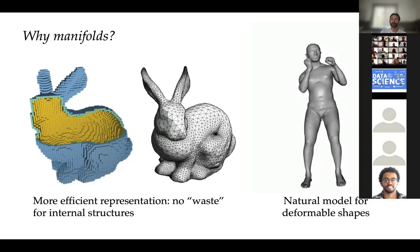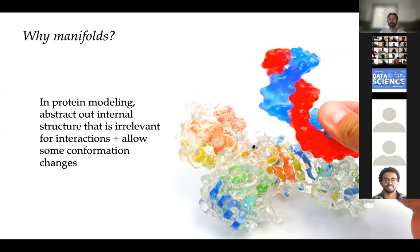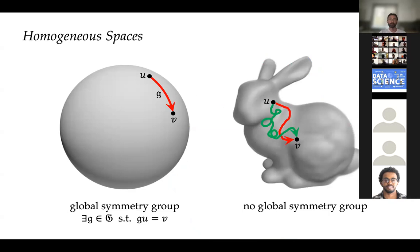Another somewhat exotic application, and a field that has exploded recently, is protein modeling. Protein molecules are 3D structures, and if you want to predict the interactions of proteins — what chemists call binding — you don't really care about what's inside; it's only the outside surface that matters for the interaction. This is a way of abstracting out internal structures that may be irrelevant for a given problem.